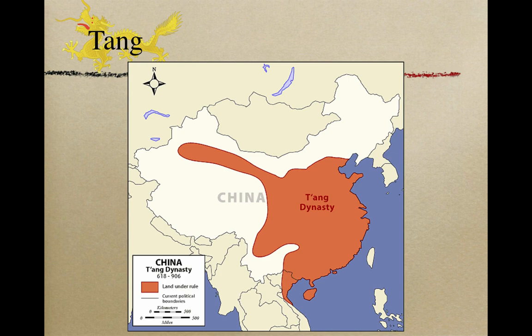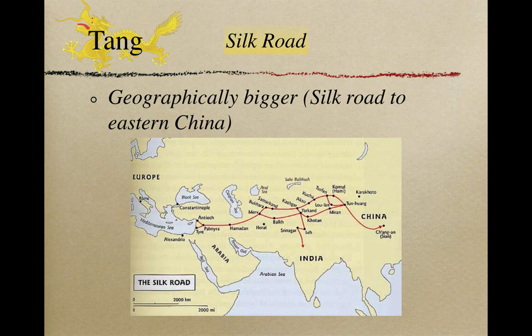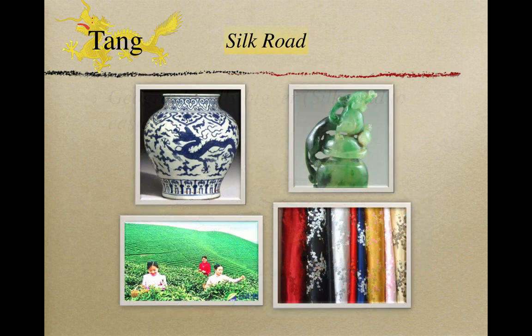The Silk Road was a series of trade routes connecting China to Central Asia and the Middle East, first opened during the Han dynasty. Chinese merchants headed west along the Silk Road with caravans of camels and ox-drawn carts laden with silk, porcelain, jade, bronze, and tea, often selling their goods to other participants in a chain of trade. They would return with glass, rugs, horses, silver and gold, gems, and spices from all over the world.